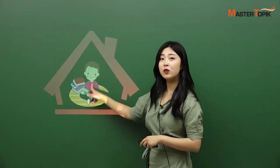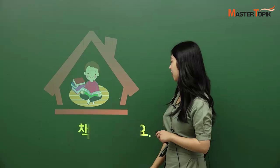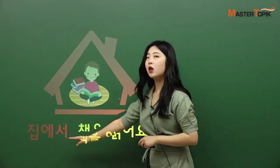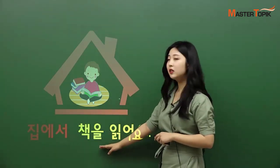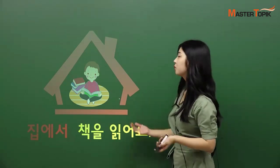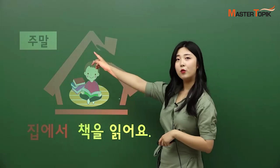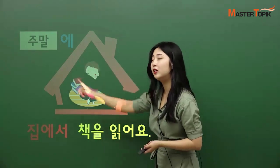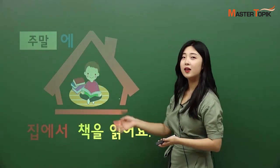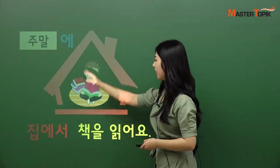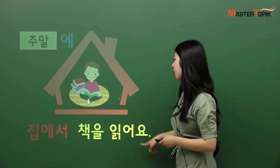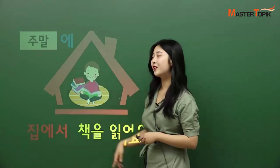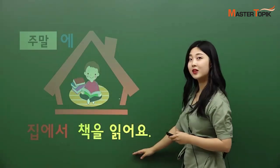What about this one? It is 책을 읽어요 — 'read a book.' In where? 집에서. 집에서 책을 읽어요. But when? We have 주말 there, and we put 에 after 주말, just like 월요일에, 화요일에, 주말에. 주말에 집에서 책을 읽어요. The action is here, the place is here, and the day — 주말.